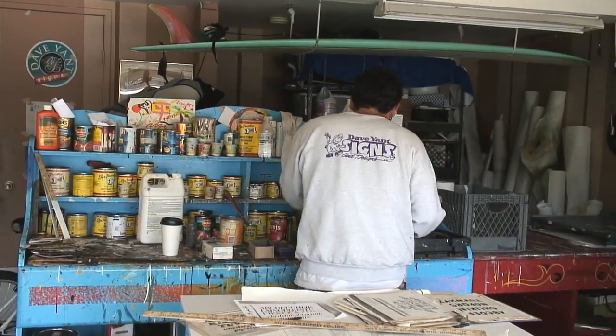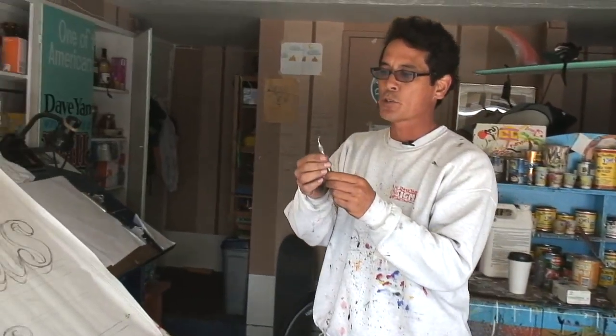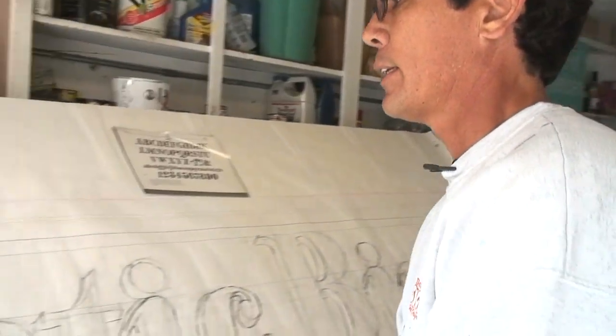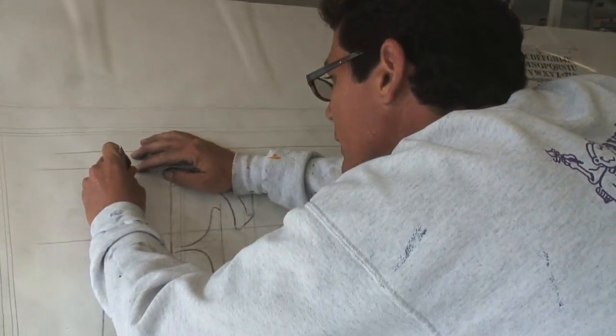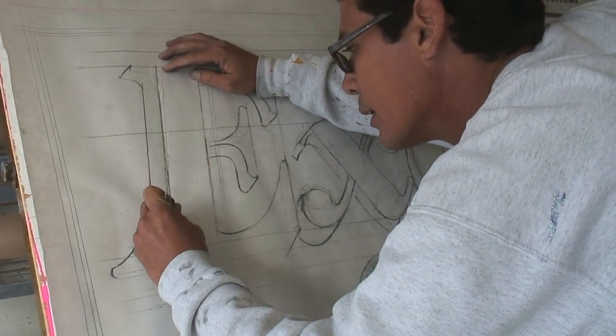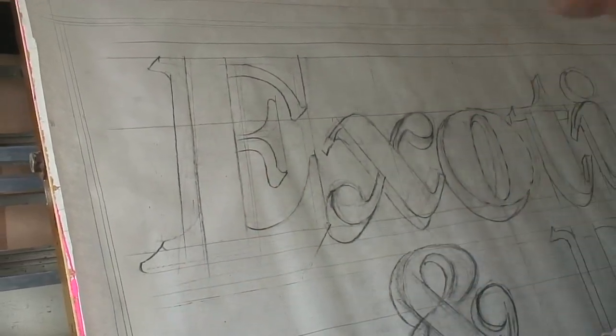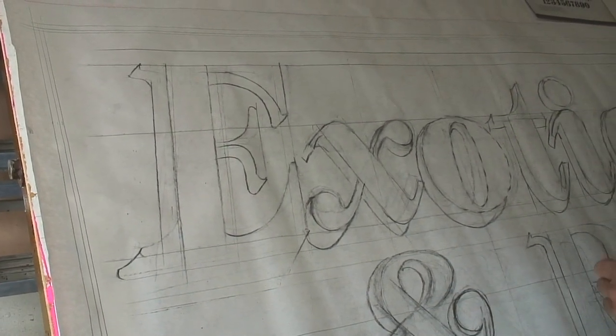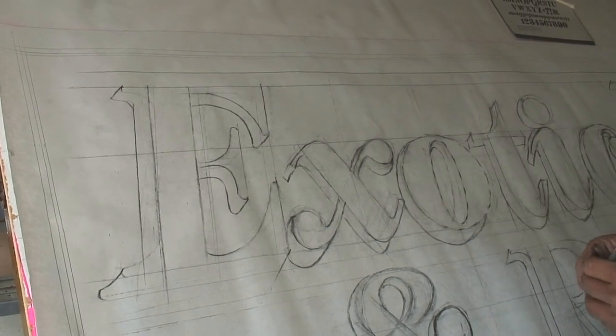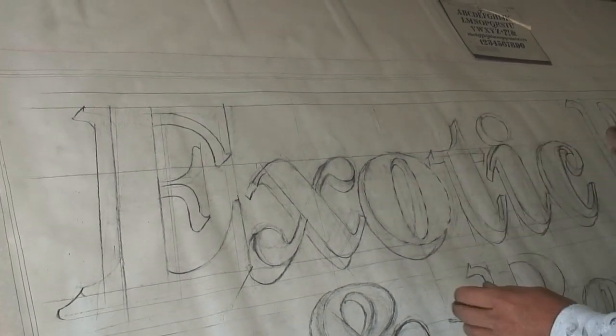Now what I do is I pounce the pattern, which is basically a pounce wheel that has a little wheel on the end with spikes on it. And what I do is I go over the letters and it leaves me a perforated dot pattern right here. And once I pounce this, I'll show you how I put it on the board and put charcoal over it and it'll give me a nice pattern to go from.